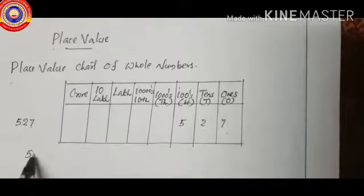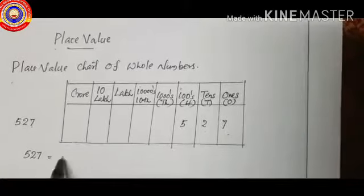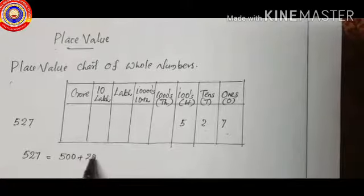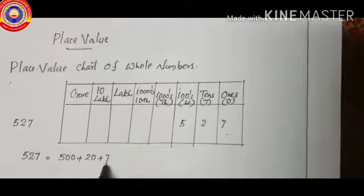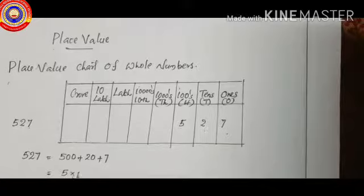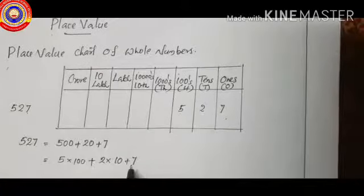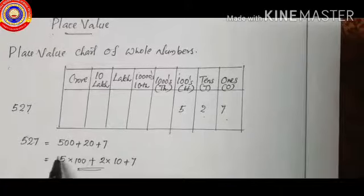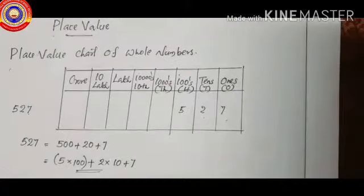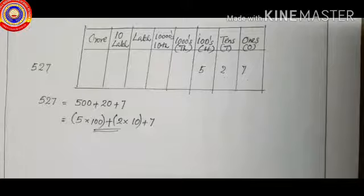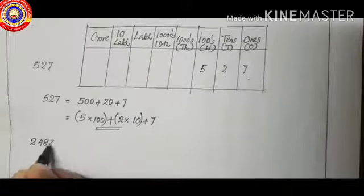That is, 527 equals 500 plus 20 plus 7, which is 5 into hundred plus 2 into ten plus 7. So the expanded form of 527 is 5 into hundred plus 2 into ten plus 7 into one.